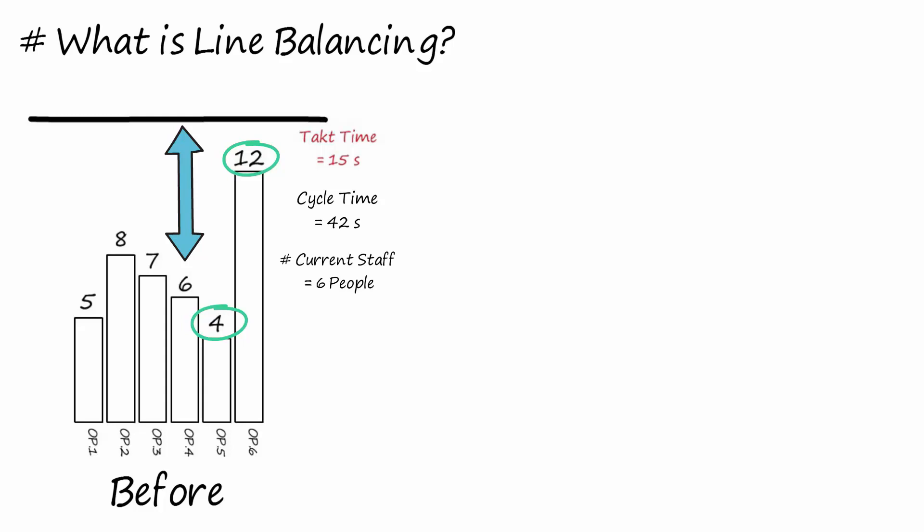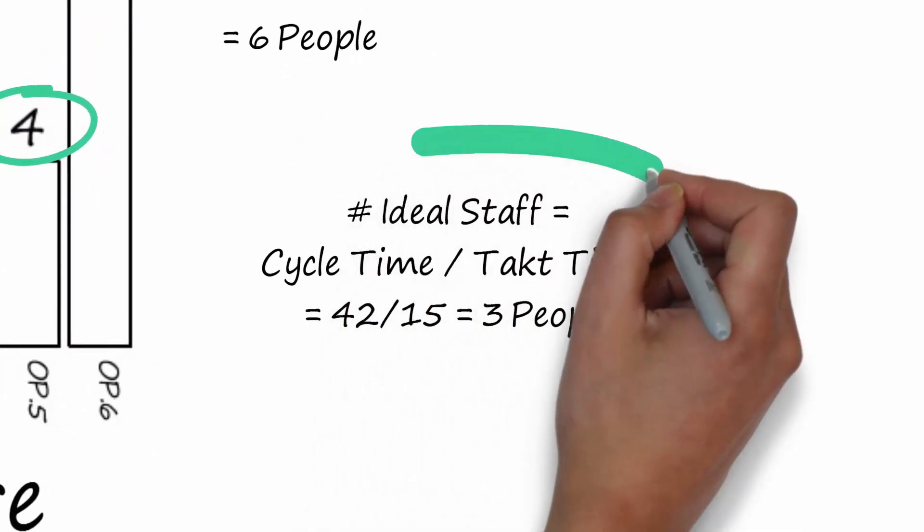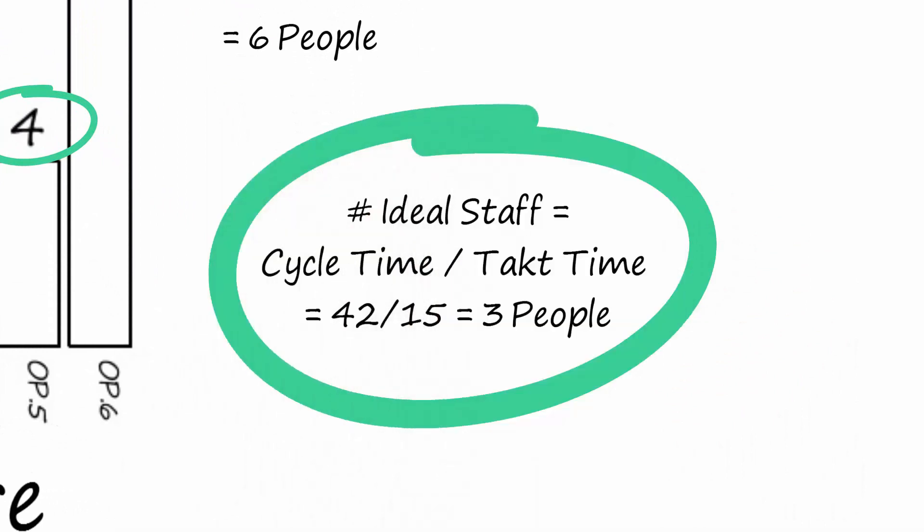Let us imagine that in the current condition, the process is designed with one operator for each station. To calculate the theoretical number of operators, the staffing formula is used: cycle time divided by takt time. In this example, 42 seconds divided by 15 seconds equals around 3 people.